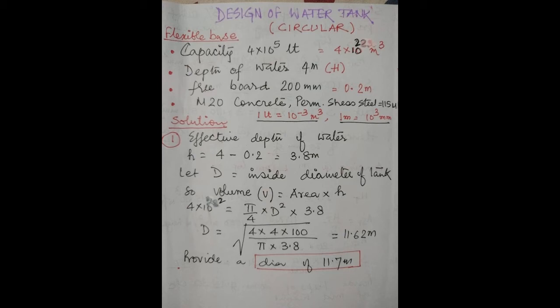Step 1: Find the diameter of the circular tank. Effective depth of water h = total depth minus freeboard = 4 − 0.2 = 3.8 m. If D is the inside diameter, volume = (π/4)D² × h. Setting this equal to 400 m³ and solving, D = 11.62 m. Provide a diameter of 11.7 m.